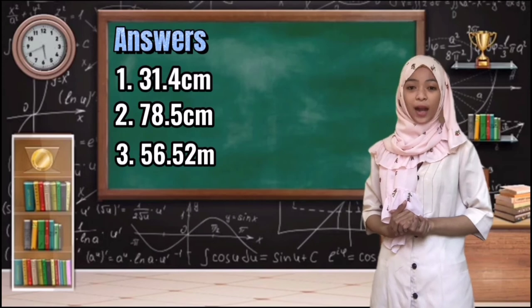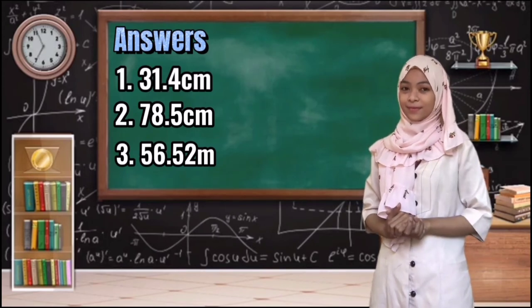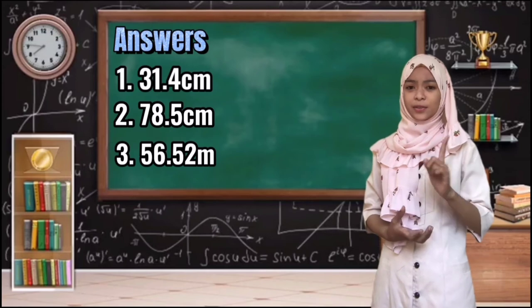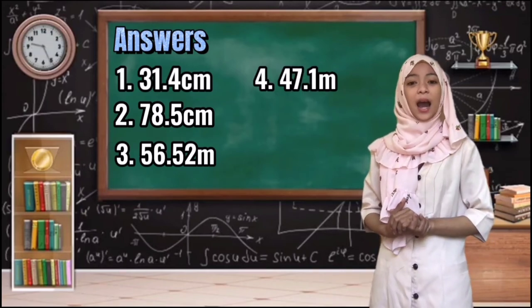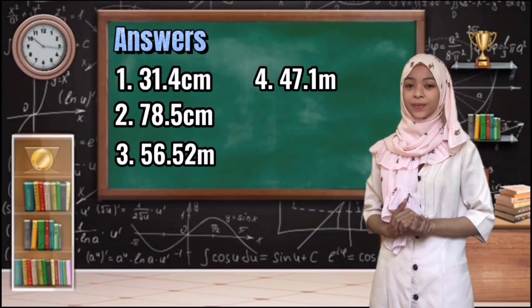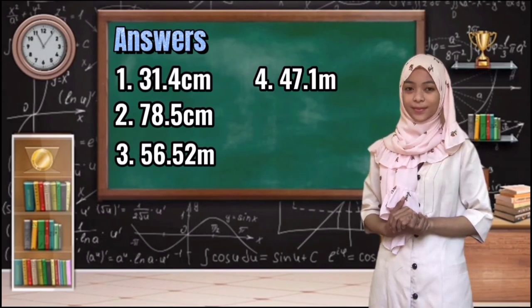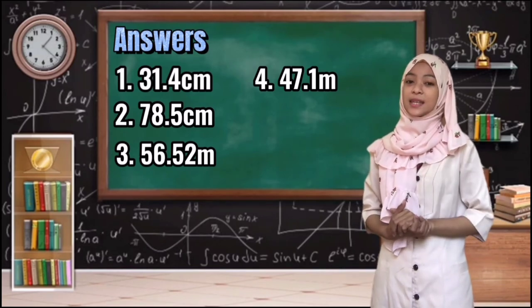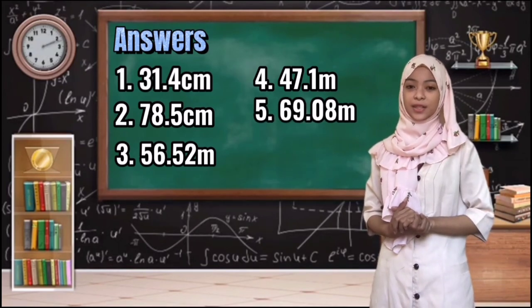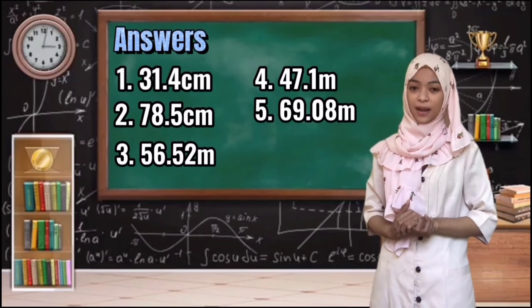How about for item number 4? Great! It's 47.1 m. How about the last number? Very good! 69.1 m is the answer for the last number.